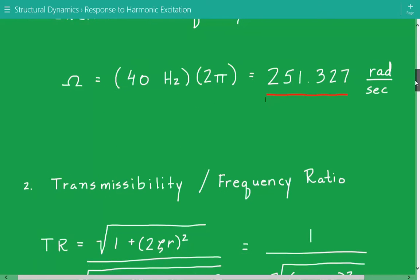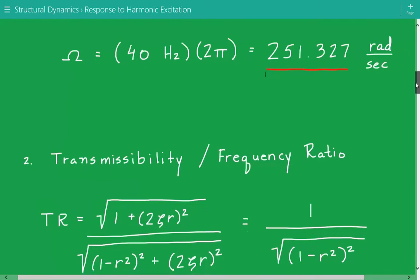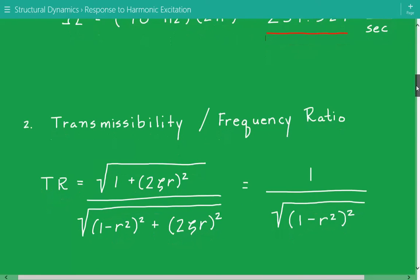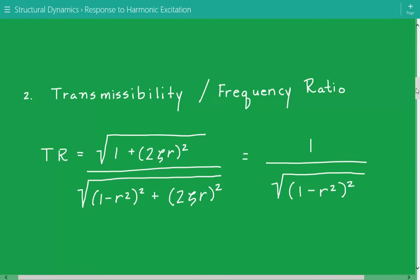Next, we're going to calculate the transmissibility and the frequency ratio. So the transmissibility equation is equal to the square root of 1 plus 2 times zeta r squared divided by the square root of 1 minus r squared squared plus 2 times zeta r squared. Zeta is equal to the damping factor and r is the frequency ratio.